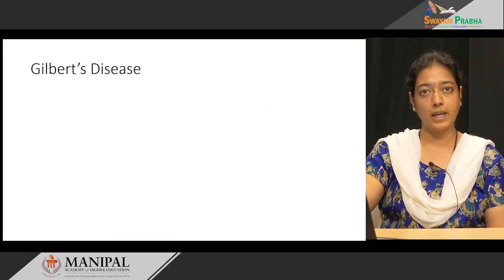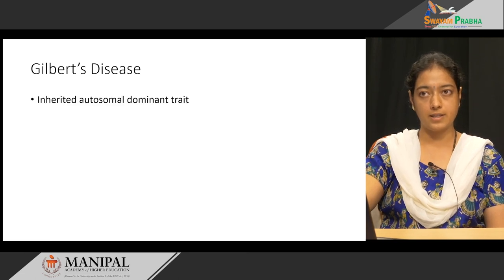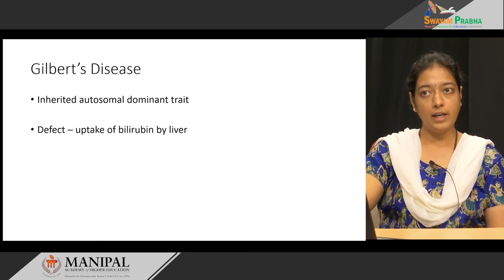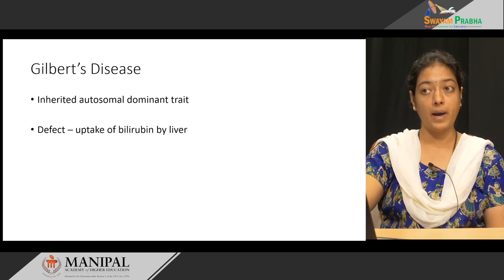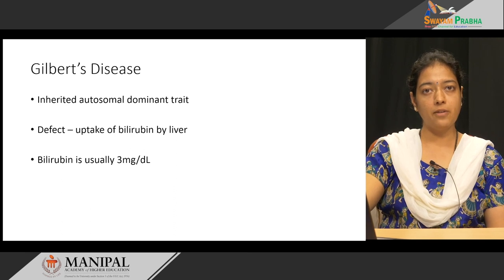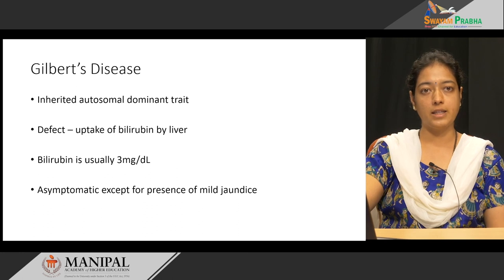The second congenital hyperbilirubinemia is Gilbert's disease. Gilbert's disease is an inherited autosomal dominant trait. The defect in this disease is impaired uptake of bilirubin by the liver. In these patients, bilirubin levels may be around 3 milligrams per deciliter, and most of the time they are asymptomatic with only mild jaundice.